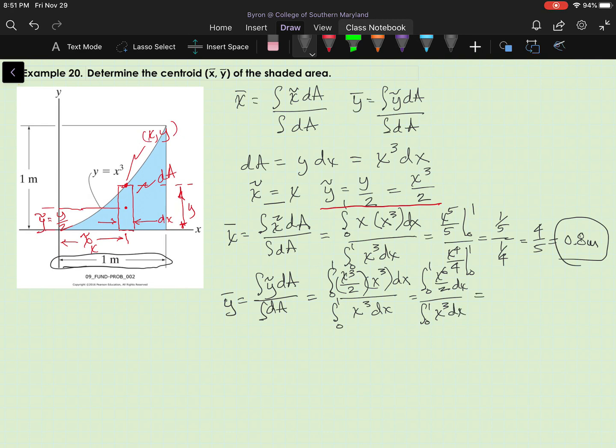And when I do that, I get x to the 7th over 14, from 0 to 1, over x to the 4th over 4. Same denominator that we found in x bar. And that's from 0 to 1. So we get 1 14th over 1 4th,